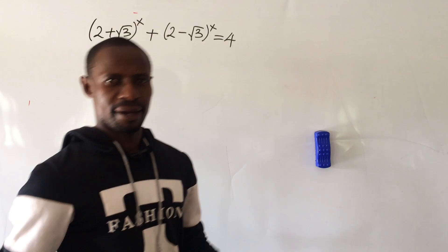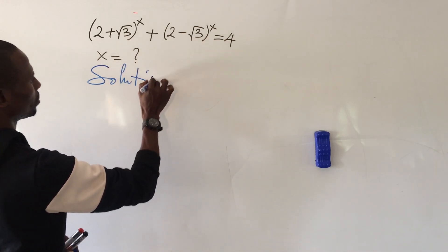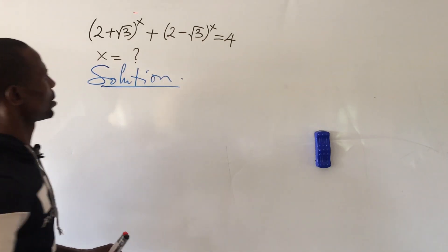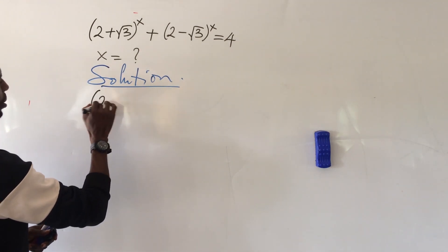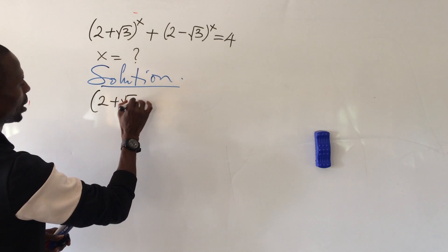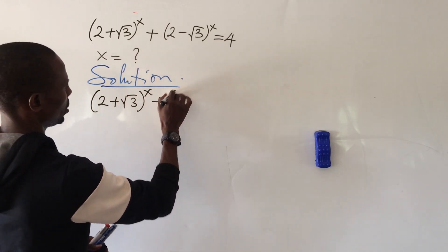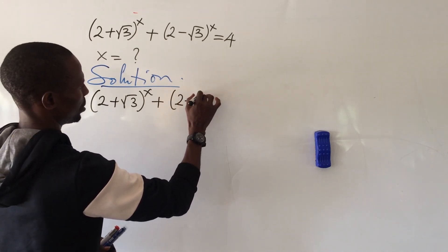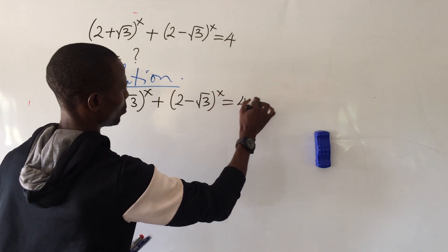Let's take our solution. We write down our equation, which says: bracket (2 + √3) close bracket to the power of x, plus bracket (2 - √3) close bracket to the power of x, equals 4.